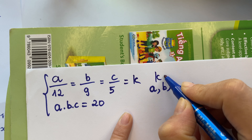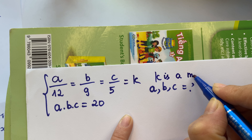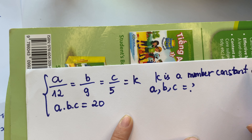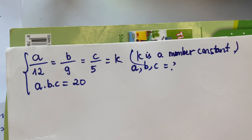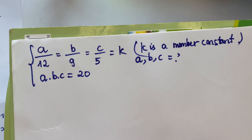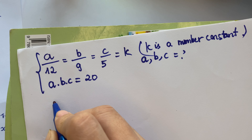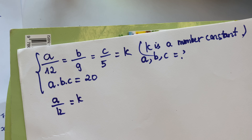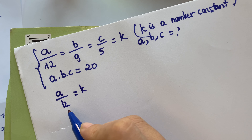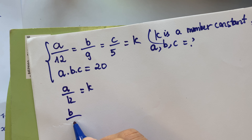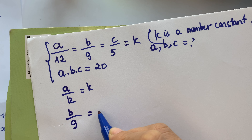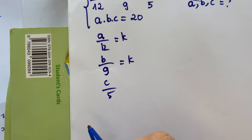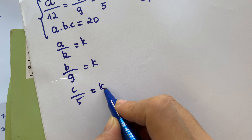k is a number constant. So we have a over 12 equals k, b over 9 equals k, and c over 5 equals k.